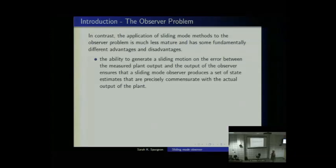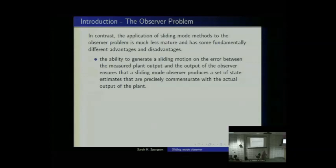The thing we're going to slide on is the output error. What we actually know is the output — if we knew the state, we wouldn't need an observer in most cases. We can measure the output Y from the plant and the output Y-hat from the observer, and form an error. From what we saw yesterday, that error can be zeroed — identically zeroed — just like S going straight to zero very quickly, staying at zero even in the presence of uncertainty and nonlinearity.